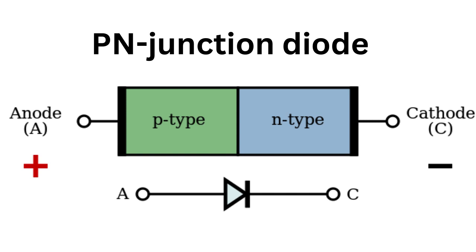When a positive voltage is applied to the P-type side of the diode and a negative voltage is applied to the N-type side, the depletion region becomes smaller and current is able to flow through the diode. This is known as forward bias.